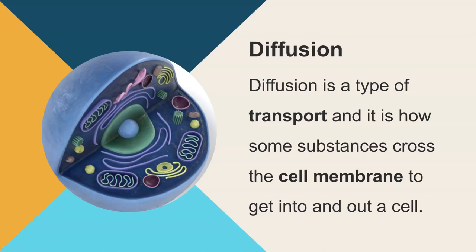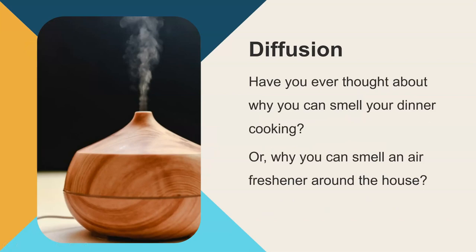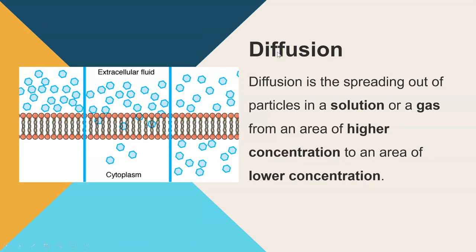In this video we're going through diffusion for GCSE biology. Diffusion is a type of transport and it's how some substances cross the cell membrane into or out of a cell. Have you ever wondered why you can smell dinner cooking from your bedroom, or why the smell of an air freshener spreads all around the house? The answer is diffusion. Diffusion is the spreading out of particles in either a solution or a gas, moving from an area of high concentration to a lower concentration. We can see here particles at high concentration on one side of the membrane diffusing across to where there is a lower concentration.